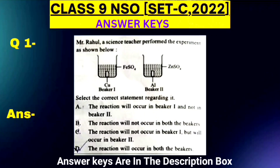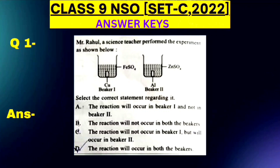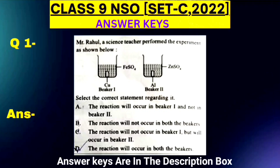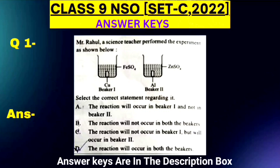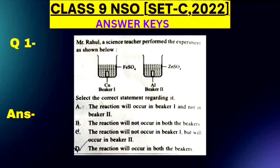In this video we are going to solve chemistry questions. Question 1: Mr. Rahul, a science teacher, performed the experiment as shown. Select the correct statement. Option A: reaction will occur in beaker 1 and not beaker 2. Option B: reaction will not occur in both beakers. Option C: reaction will not occur in beaker 1 but will occur in beaker 2. Option D: reaction will occur in both beakers. Here we have two beakers — one with ferrous sulfate solution.